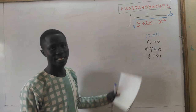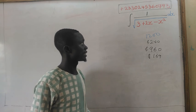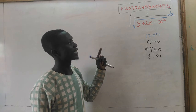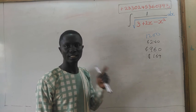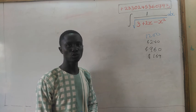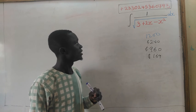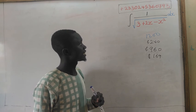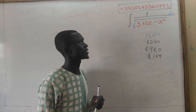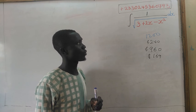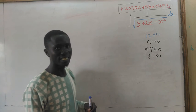If you are new here, kindly subscribe to my channel. In this lesson, we are going to learn how to integrate using the method of completing the square. The question on the board is: integrate 1 divided by the square root of 3 plus 2x minus x squared, dx.